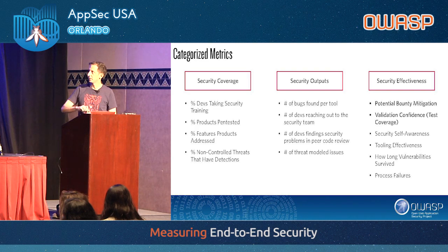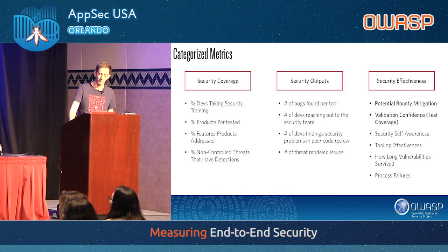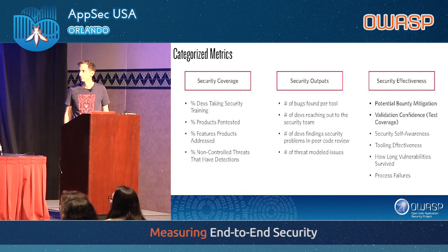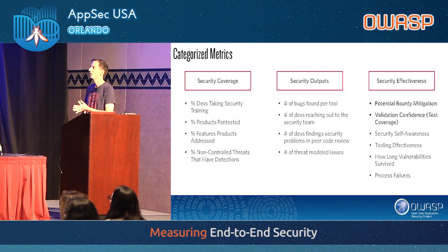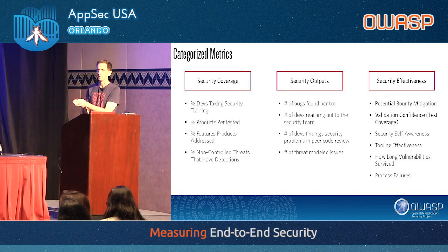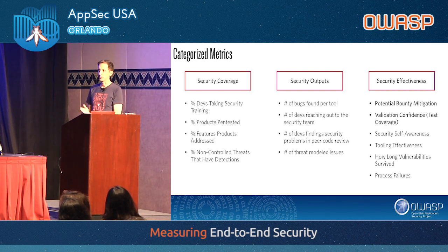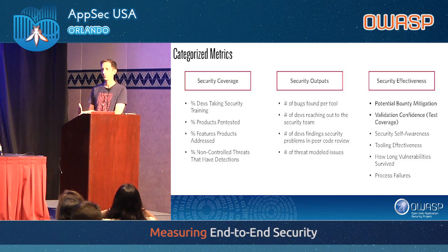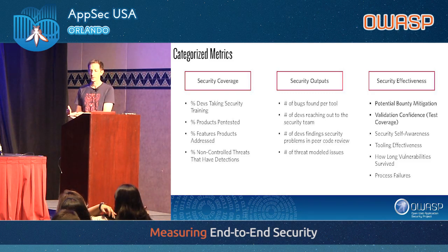We add two more security effectiveness metrics from this: potential bounty mitigation and validation confidence. These metrics together should tell us, based on coverage and outputs, is our SDL effective, is our threat modeling process effective, and how much are we improving? You may have threat models and controls in place, but just adding another control — how much more secure did that actually make your company?